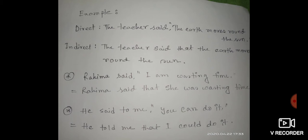Third example: 'He said to me, you can do it.' In indirect speech it will be 'He told me that I could do it.' 'You' is the second person and it will follow 'me,' the object of the reporting verb. Since 'me' is the objective form of 'I,' we place the subjective form — 'I' — in the indirect speech.